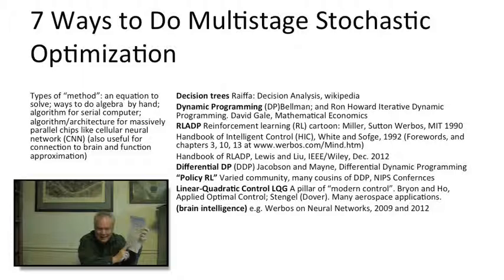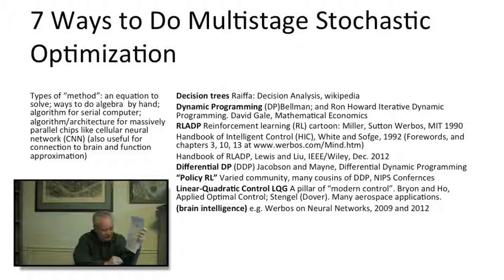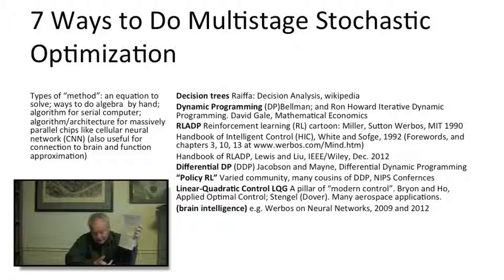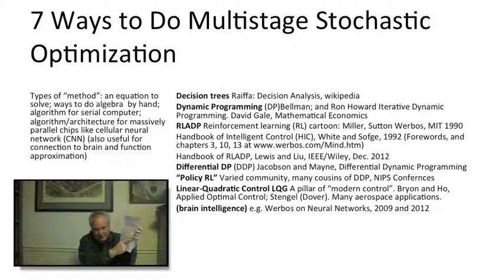Of course there are other people for whom a method is a way to do algebra to figure out the controller. But for people in computational intelligence and computer science, when you say you have a method, what you mean is you have an algorithm — not just a concept, but an actual algorithm you can implement. These books give pseudocode for working algorithms that you can run on a PC or a large mainframe.